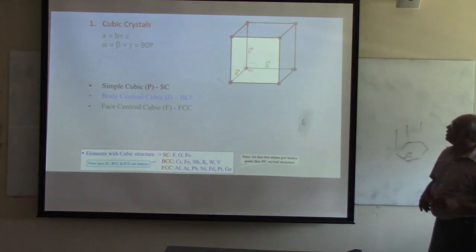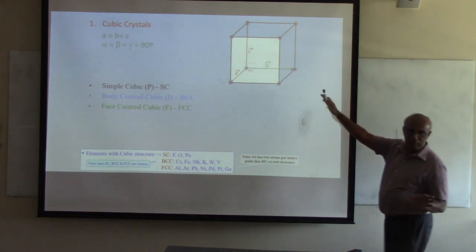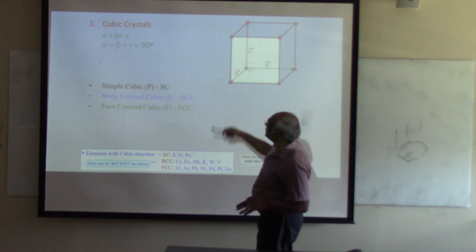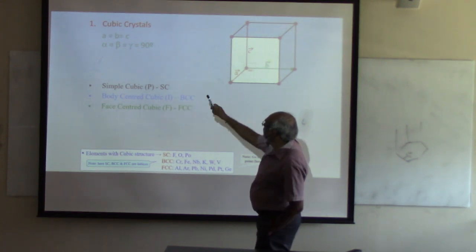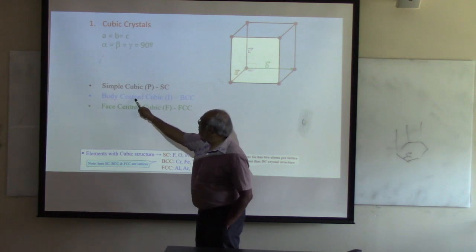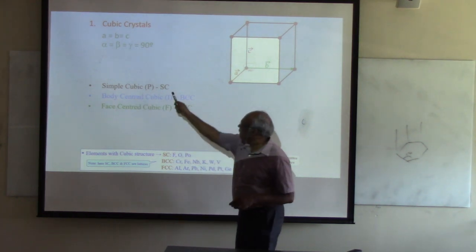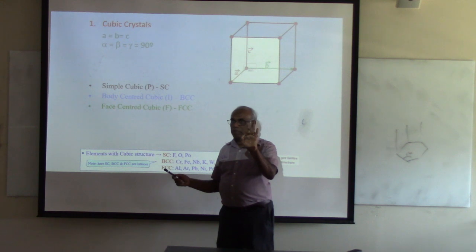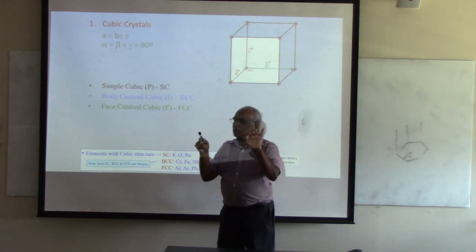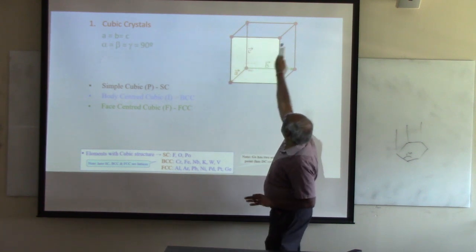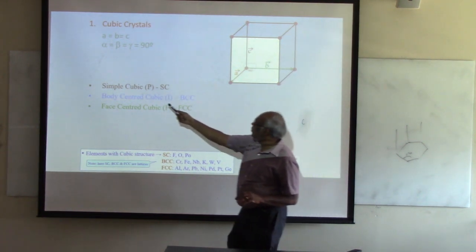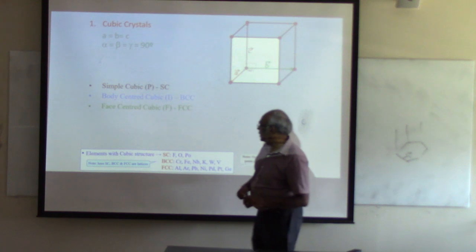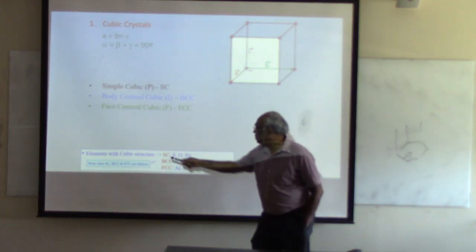Cubic is the most symmetric system — A, B, C all equal, all angles 90 degrees. Cubic crystals can be simple cubic, body-centered, or face-centered. Simple cubic is called primitive, meaning only one lattice point per unit cell — you can only have lattice points at the edges.